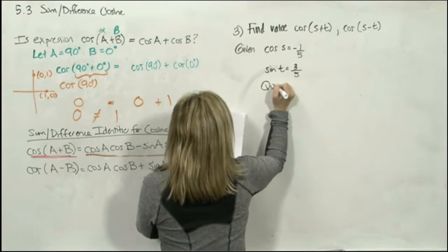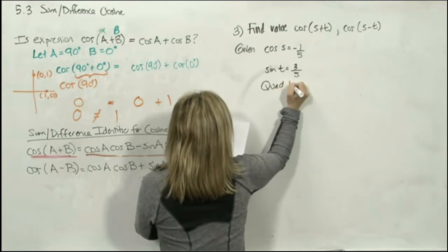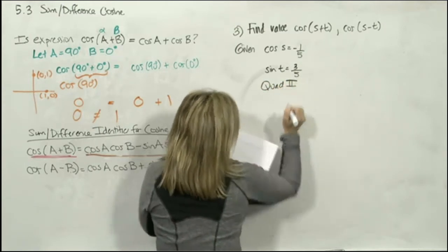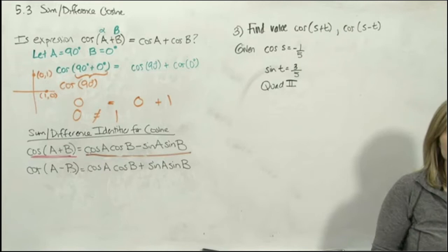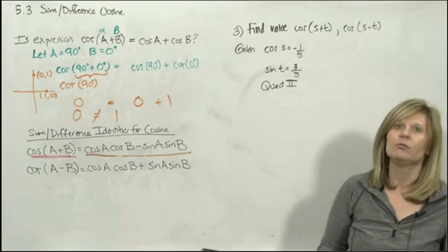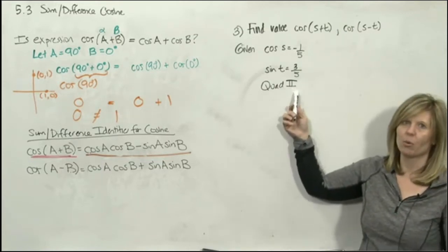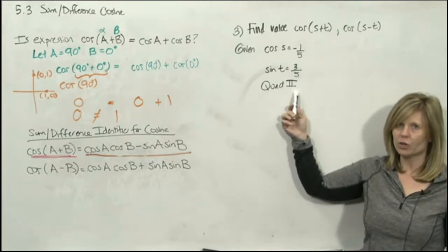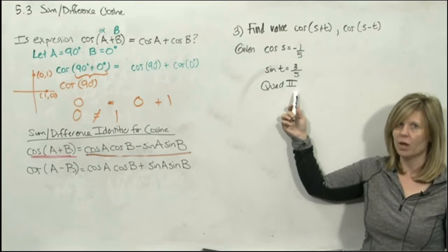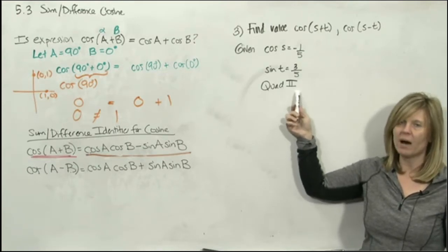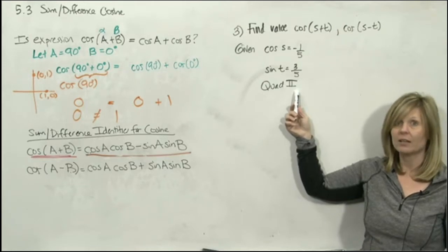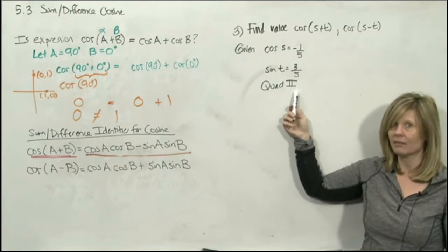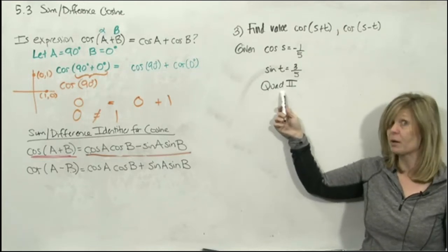You're given: cosine(s) = −1/5, sine(t) = 3/5, and you're told we're in quadrant two. Knowing the quadrant is very important — in quadrant two, sine is positive, which means all other trig functions are negative.